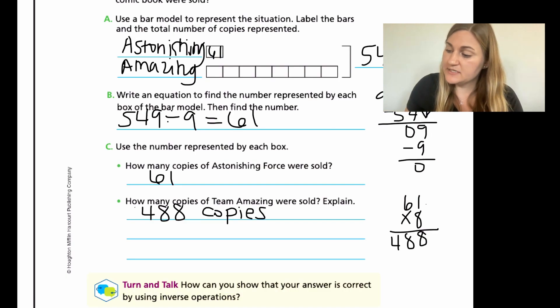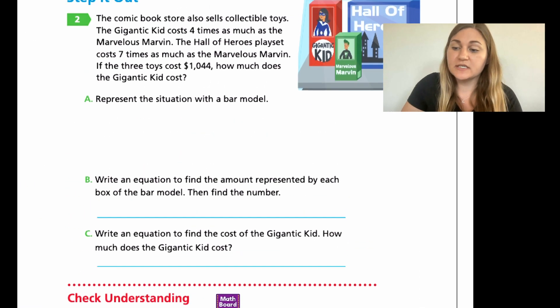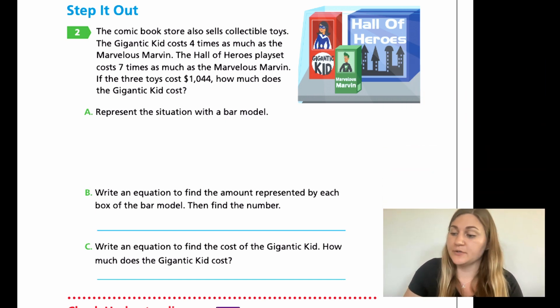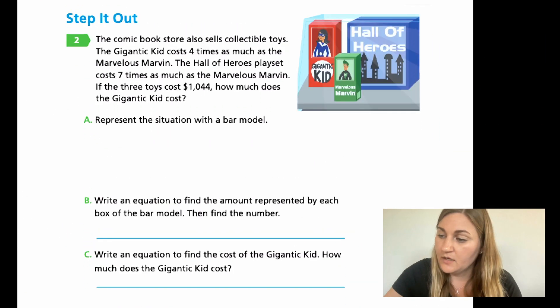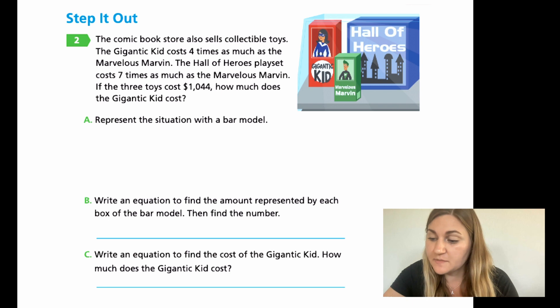We're going to move from page 67 to 68 and we're just going to be doing step it out problem number two. So number two reads the comic book store also sells collectible toys. The gigantic kid costs four times as much as the Marvelous Marvin. The Hall of Heroes playset costs seven times as much as the Marvelous Marvin. If the three toys cost $1,044, how much does the gigantic kid cost?